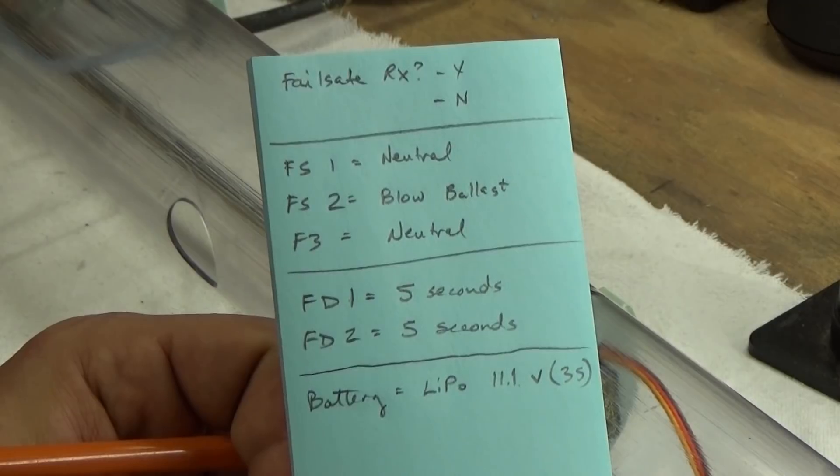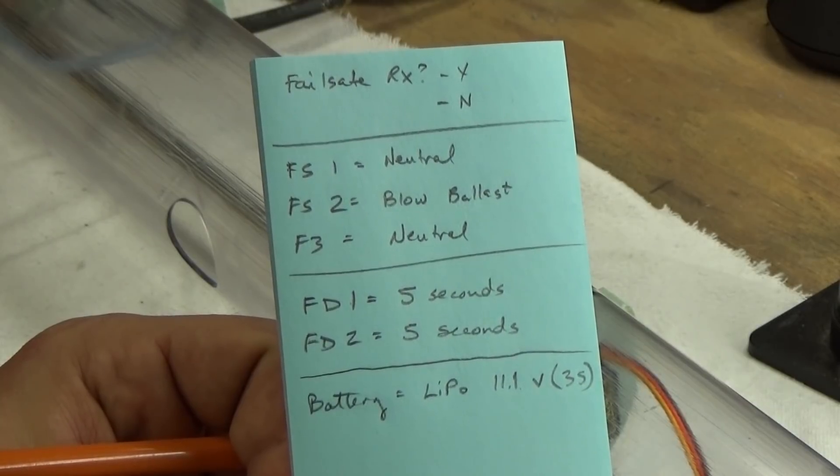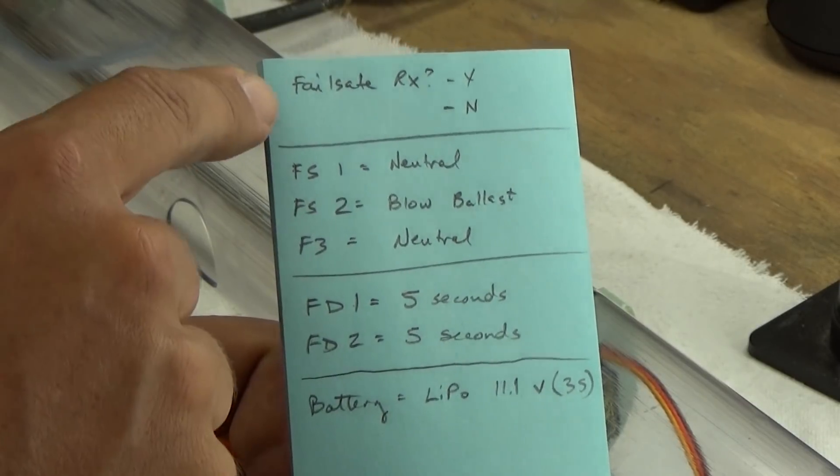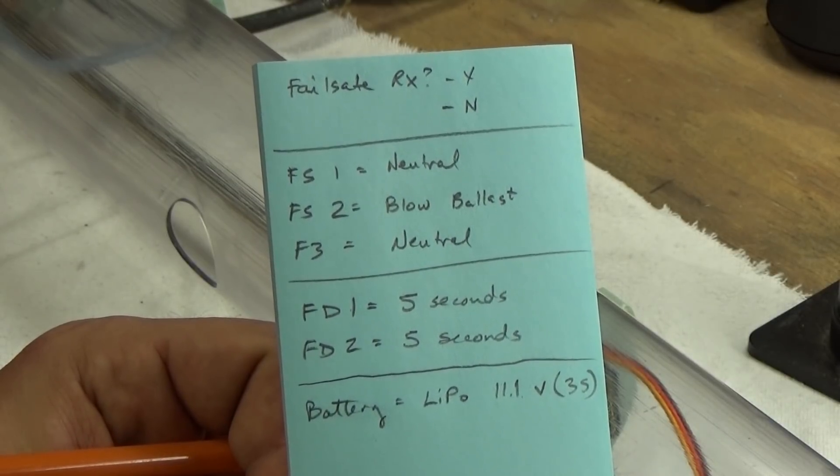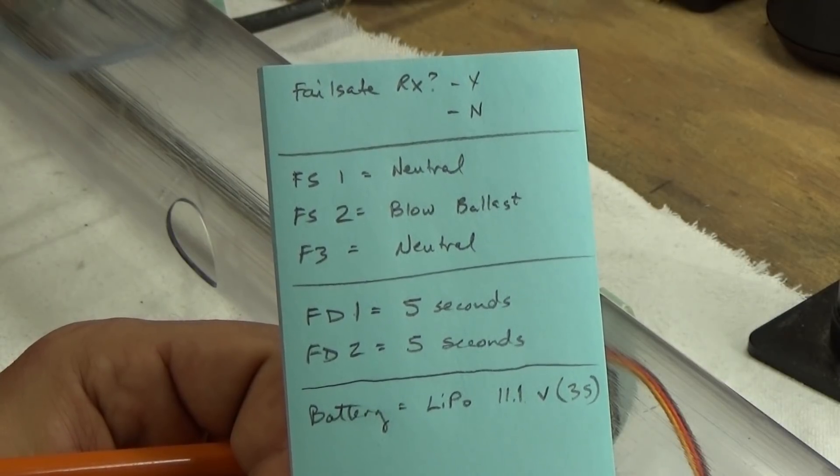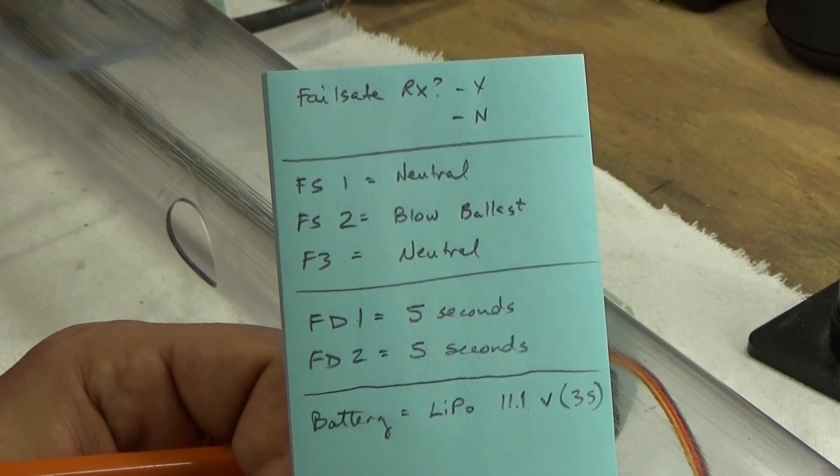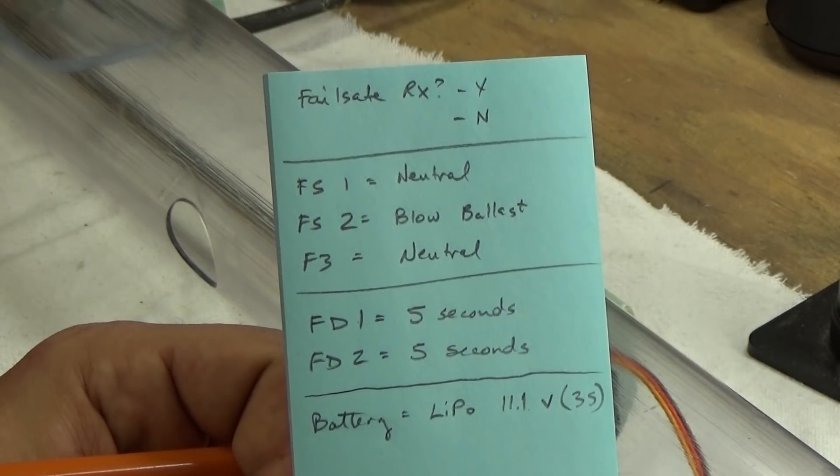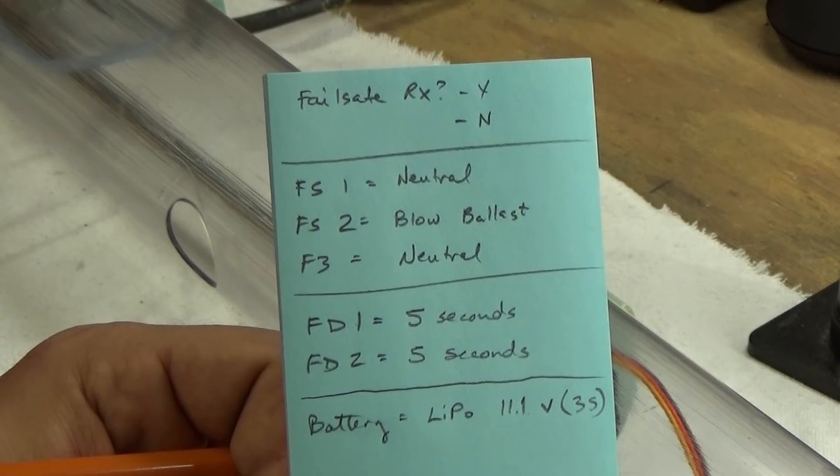This is the decision tree that you're going to want to write down to make the setup of your battery link monitor nice and easy. The first thing you need to make a decision about or find out about is whether or not your receiver has a built-in failsafe. Typically a PPM receiver does not have a built-in failsafe. Unfortunately that's the default setting on the battery link monitor, so if you do not have failsafe function built into your receiver you can actually skip that step.